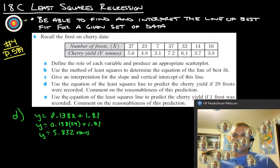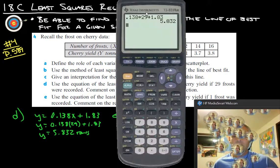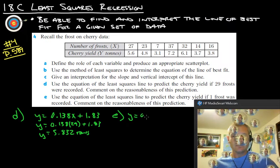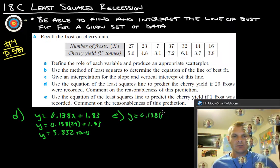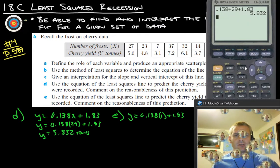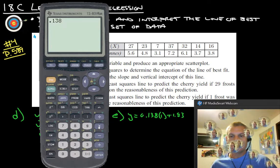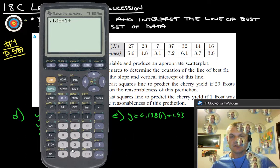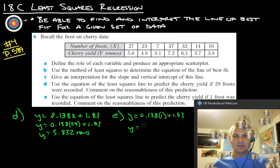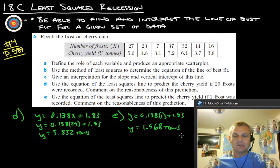And then the last question says, use the equation of least squares line to predict the cherry yield if one frost was recorded. So let's do that one right here next to it. So we'll do that with one frost. So really, we have y equals 0.138 times 1 plus 1.83. So if we get our graphing calculator back out, let's try that again. 0.138 times 1, which isn't going to change anything, right? Plus 1.83. And we get 1.968. And that's tons as well.